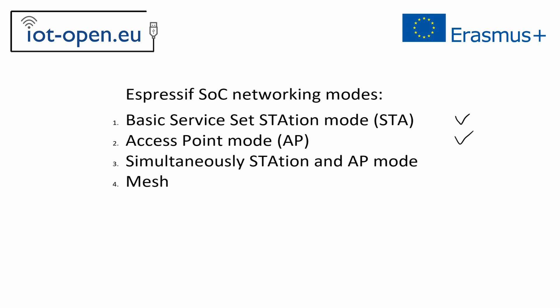Simultaneous station mode (STA) and access point mode (Soft AP) — a mode in which the ESP system-on-chip acts as a repeater or gateway, with devices connected to it and, at the same time, connected directly to an external router. Mesh networking, with many ESP system-on-chips connected in multipoint connections, with only one gateway connected to the external router.